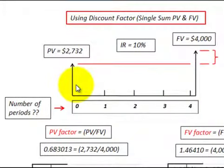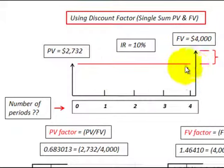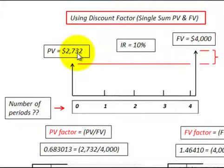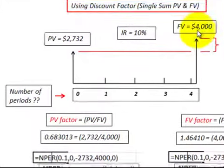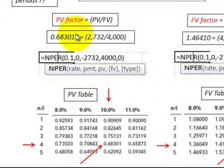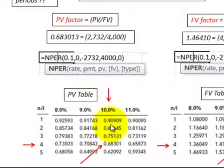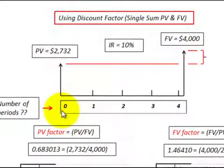Let's look at our first cash flow diagram. Say we have $2,732 to invest as our present value, and we want to earn $4,000 with a 10% interest rate. The question is: how many periods will it take? We calculate the present value factor, then go down the present value table at 10%, find that factor amount, and move across to find the number of periods — which is four periods.